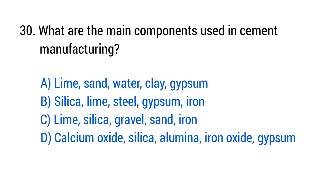Question No. 30: What are the main components used in cement manufacturing? The right answer is Option D: Calcium Oxide, Silica, Aluminium, Iron Oxide, and Gypsum.